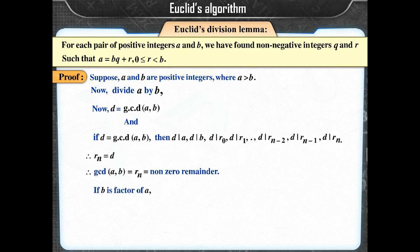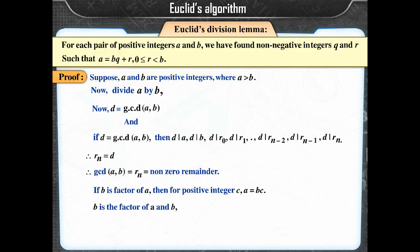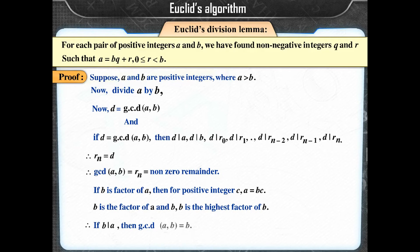Special case: If B is a factor of A, then for some positive integer C, A = B·C. B is the factor of A, and B is the highest factor of B. Therefore if B divides A, then GCD(A, B) = B.